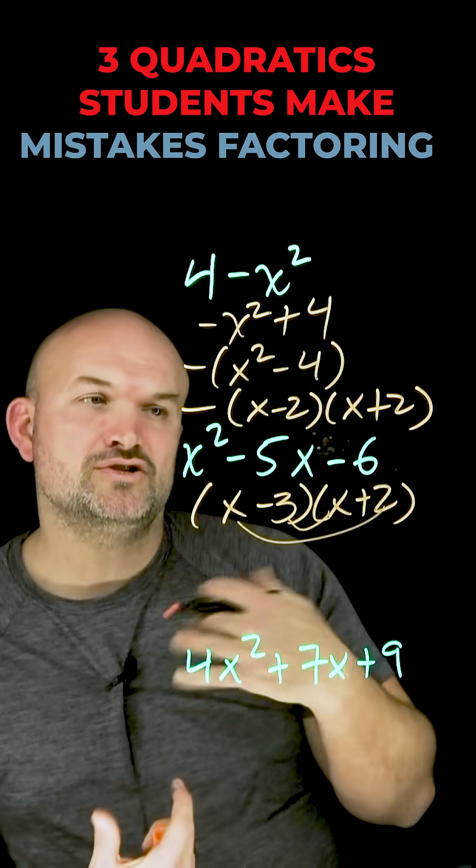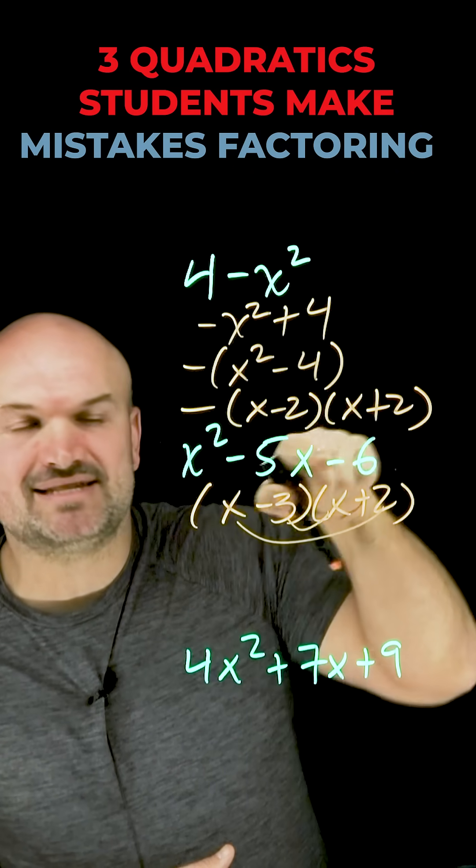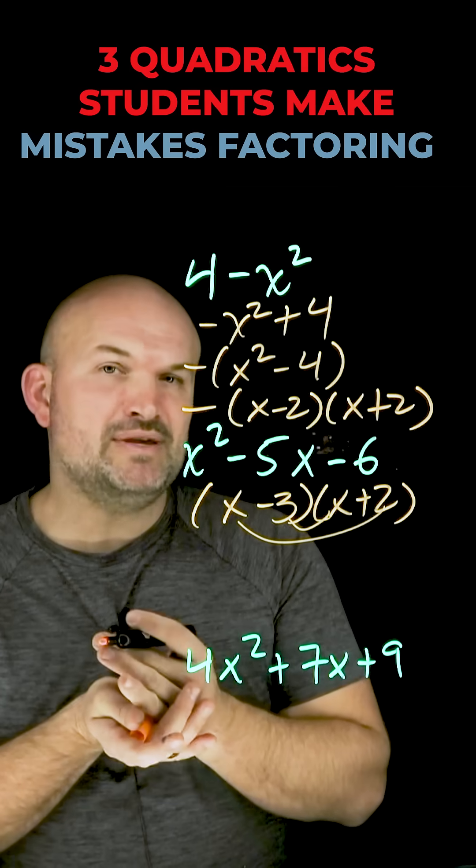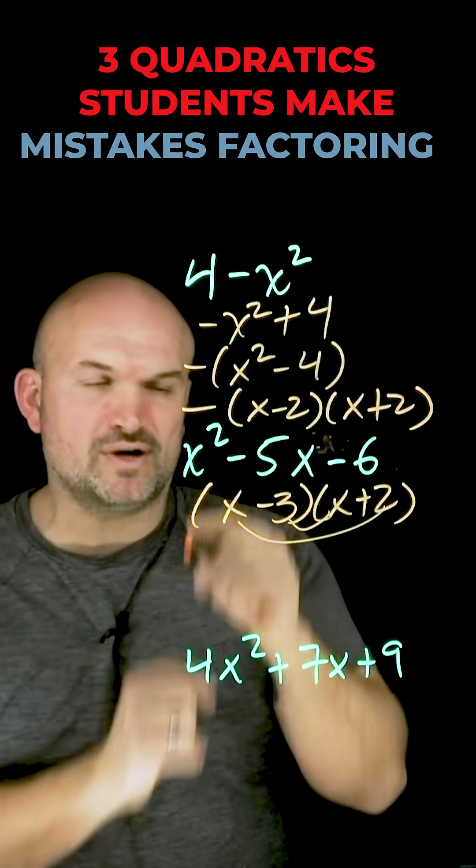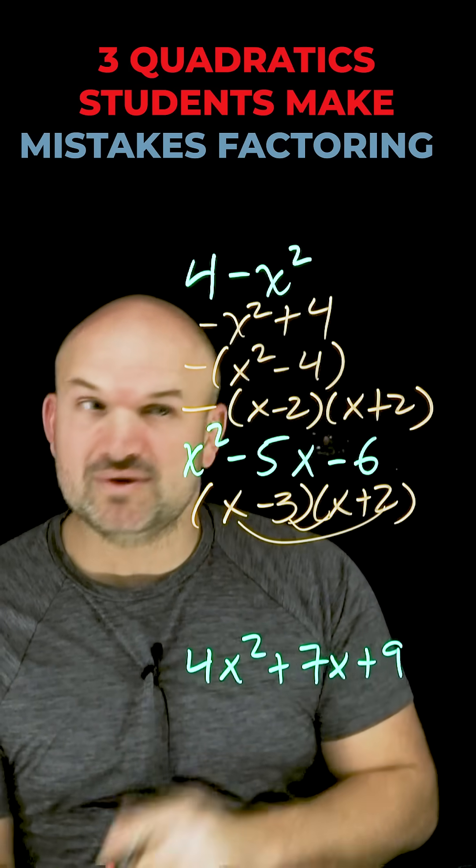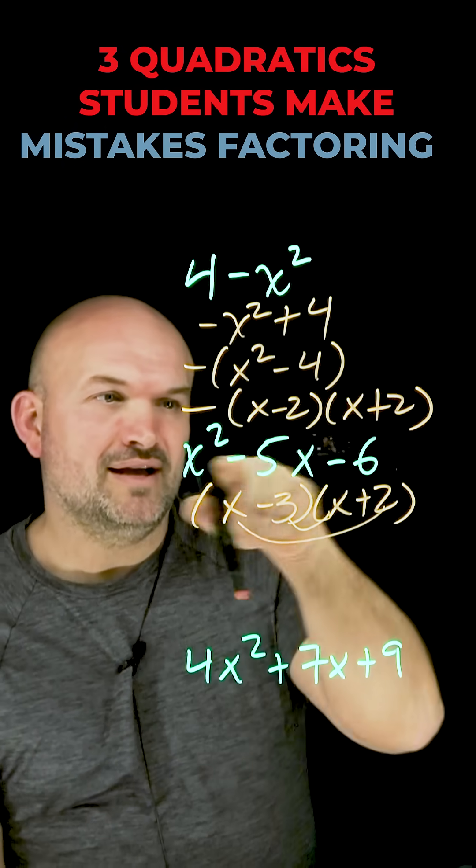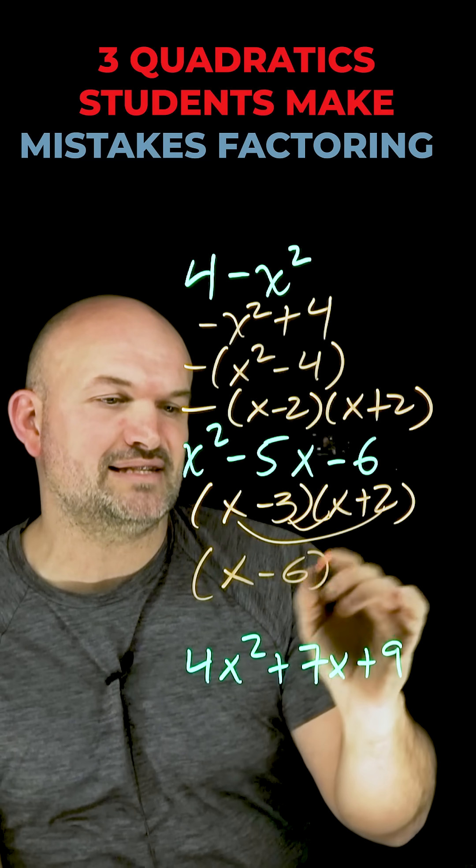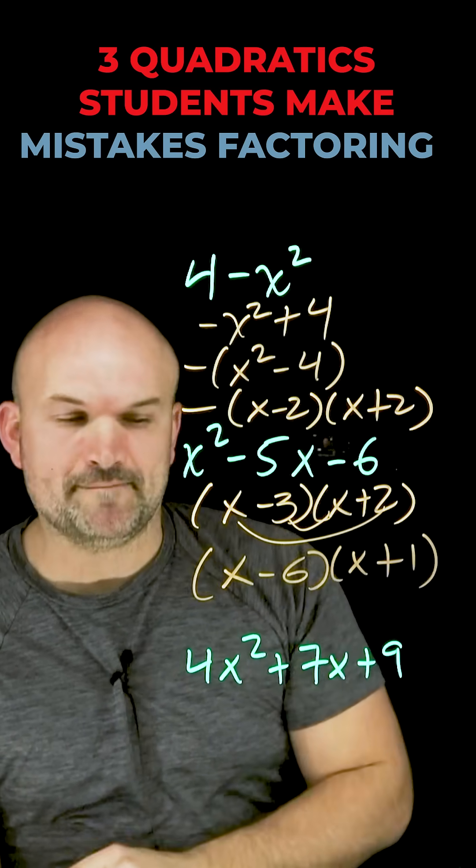not negative 5x. So what we need to understand is whenever my last number is negative, whatever the factors are, I'm thinking of the difference between those two factors. The difference between 3 and 2 is 1, so it doesn't work here. What are the other two factors that multiply to give me 6? That is 6 and 1. Those have a difference of 5. So therefore, if I want a difference of 5 and it's negative 6, I can rewrite this as x minus 6 times x plus 1.